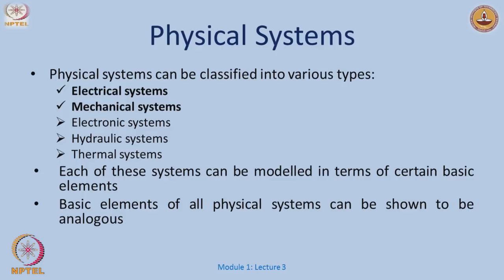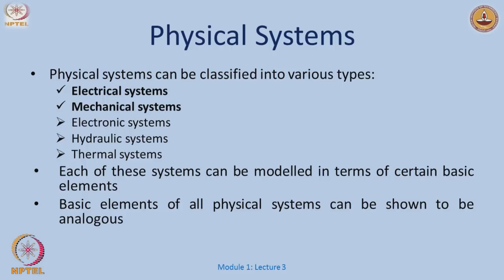We start by classifying things into several types: it could be an electrical system, a mechanical, electronic, hydraulic, thermal, or several other systems. Each of these systems can be modeled in terms of certain very basic elements. We will also see if there is any analogy across domains between electrical and mechanical systems, and through this lecture we will concentrate mainly on electrical and mechanical systems.